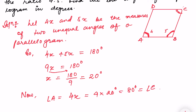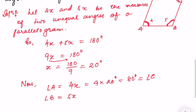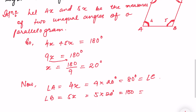Angle B equals 5x, which is 5 into 20, giving us 100 degrees. Similarly, the opposite angle D is also equal to 100 degrees.